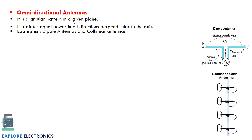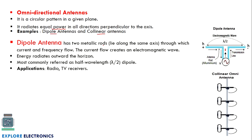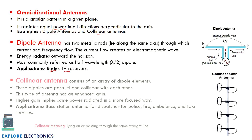An omnidirectional antenna has a circular radiation pattern in a given plane — it radiates equal power in all directions perpendicular to the axis of the antenna. Examples are dipole and collinear antennas. The dipole antenna has two metallic rods through which current and frequency flow. This antenna is mostly referred to as a half-wavelength dipole (λ/2), and is used in radio and TV receivers.